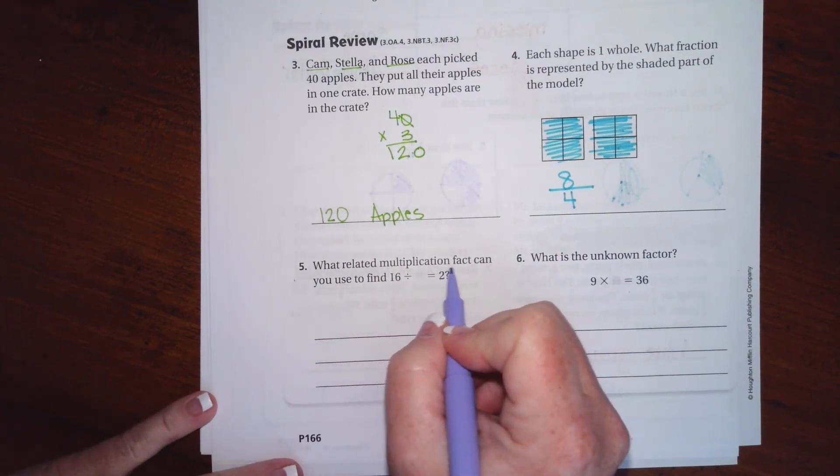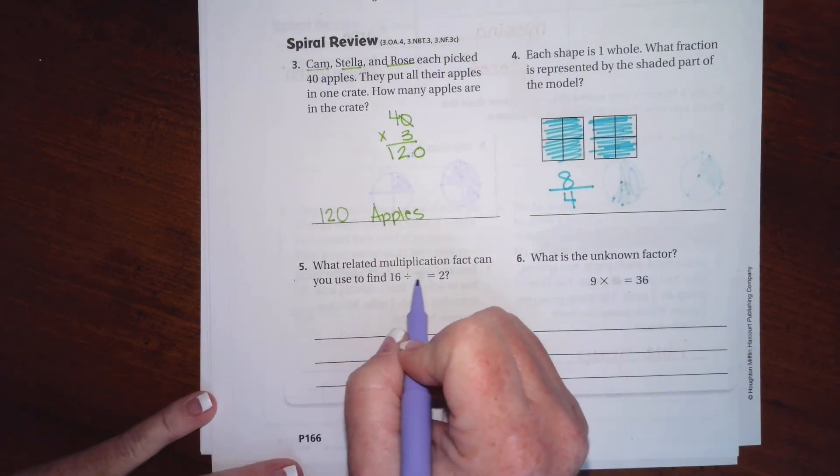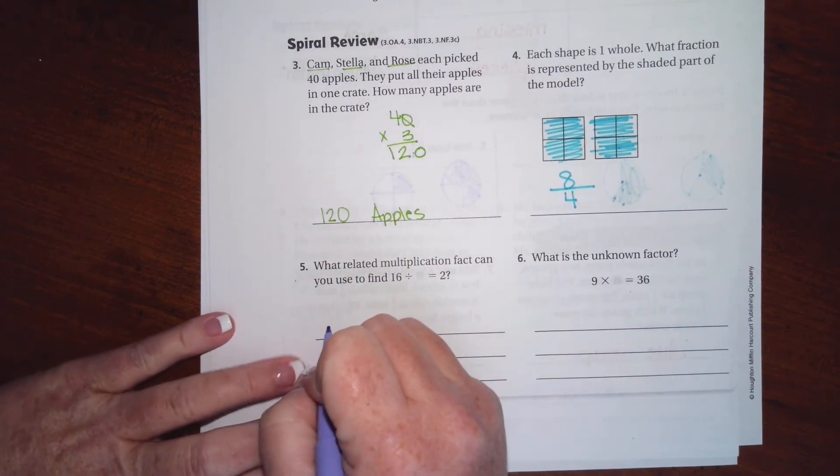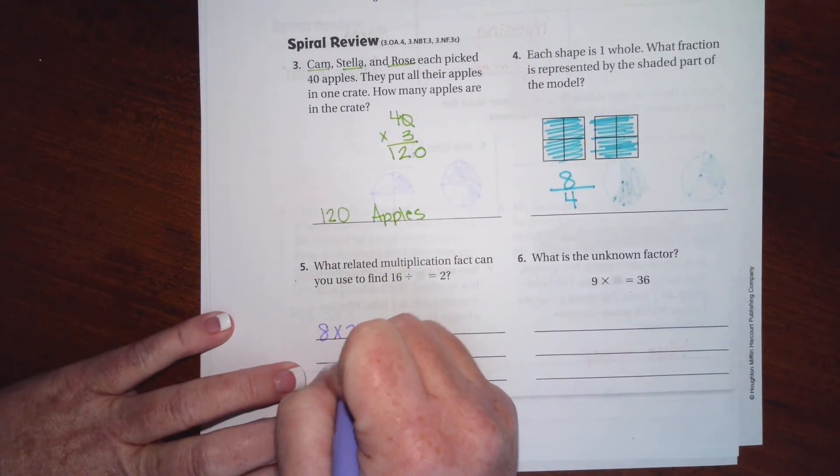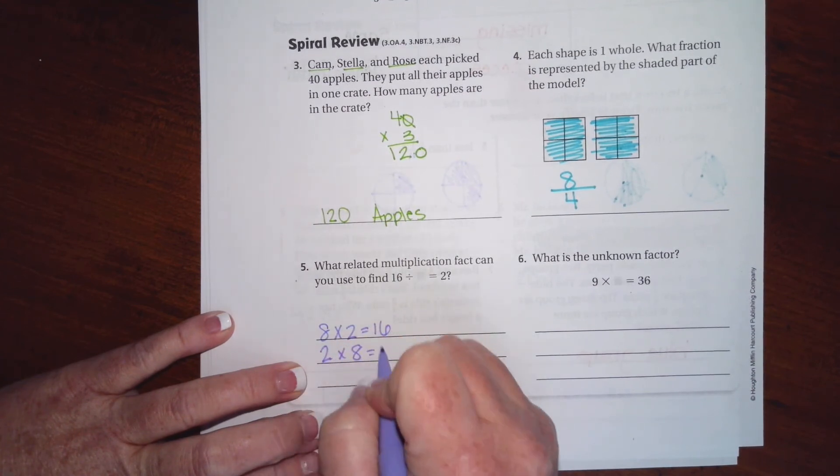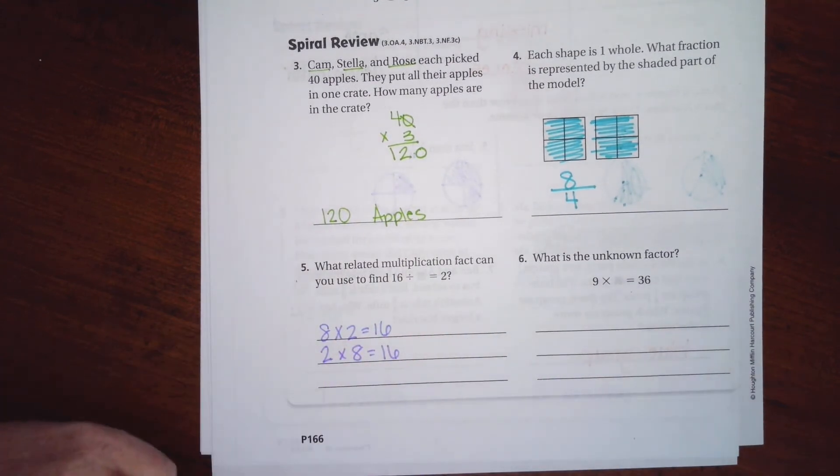What related multiplication facts can you use to find 16 divided by blank equals 2? Well, we could do 8 times 2 equals 16, or we could do 2 times 8 equals 16. Either one guys, your choice.